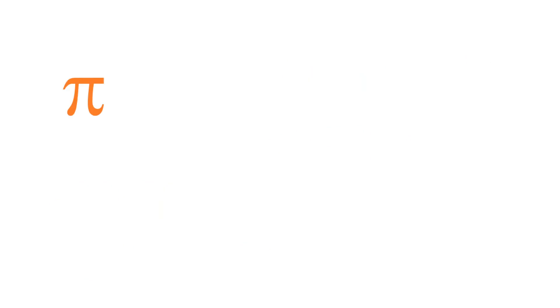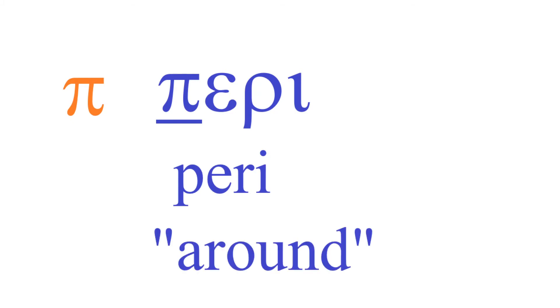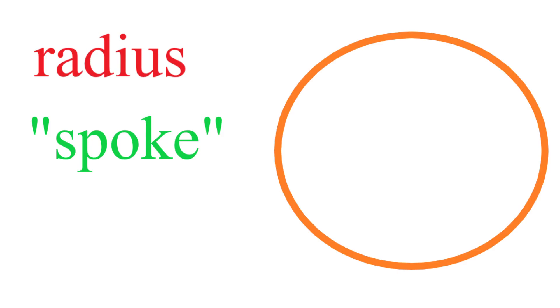The Greek letter pi is the first letter of the Greek word peri, which means around. Another geometry word used for circles is radius, which is Latin for spoke, a spoke on a wheel. This is the spoke bit between the tread and the center of the wheel.